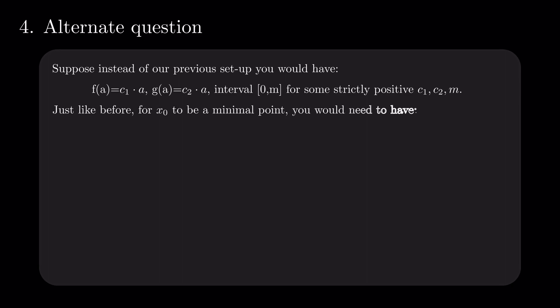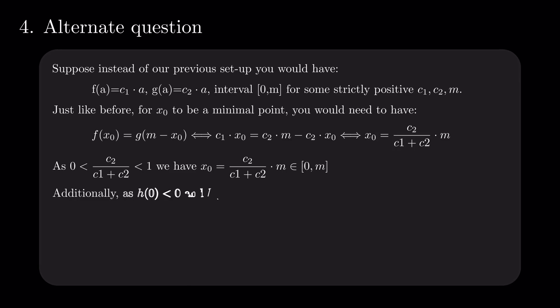Now, let's look at an almost instant way to solve this problem when f and g are increasing linear functions and the interval of choice is 0 m. The only minimal point we can have is c2 divided by c1 plus c2 times m. This is inside the interval 0 m and indeed it minimizes the expectation.